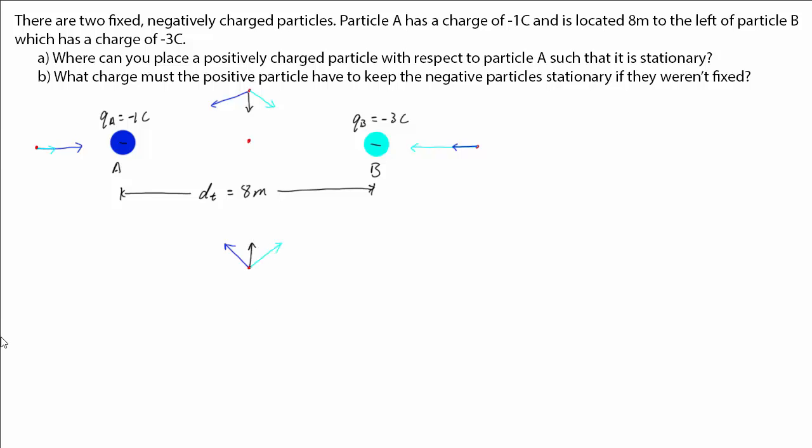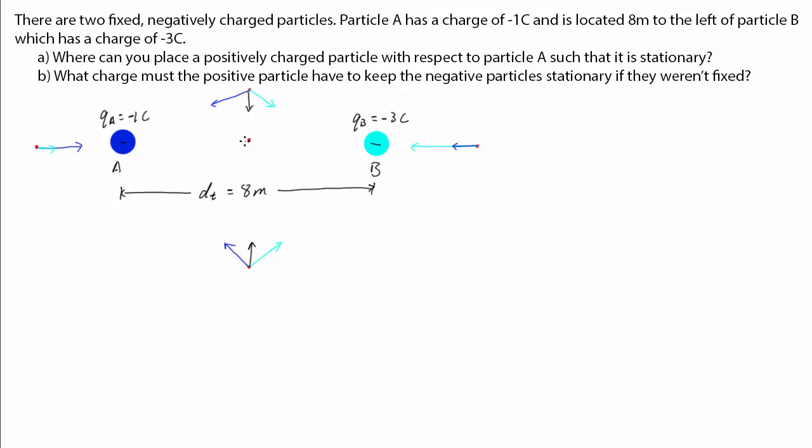But if the positive particle is placed between A and B, it would be pulled to the left by A. Let's call this force FA and to the right by B, FB. If we can make these two forces equal, then the positive particle will experience a net force of 0 and thus be stationary.